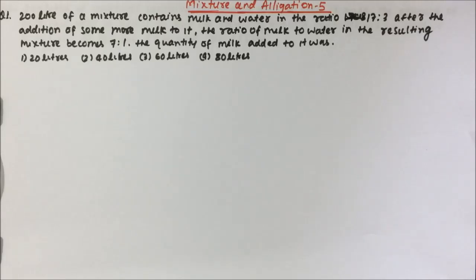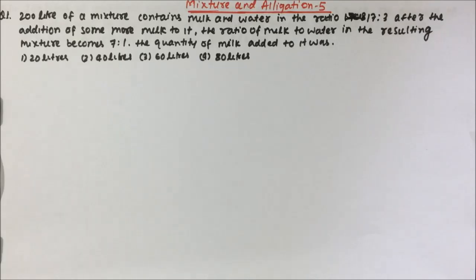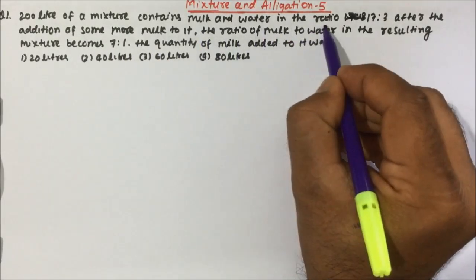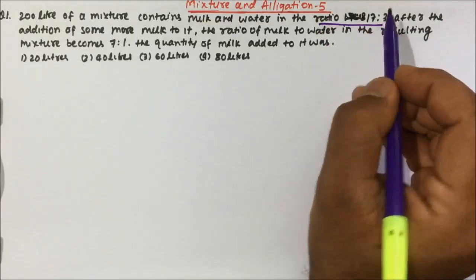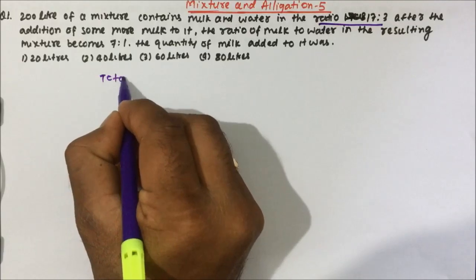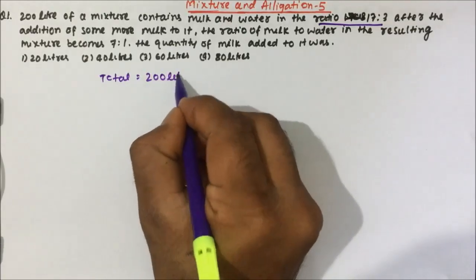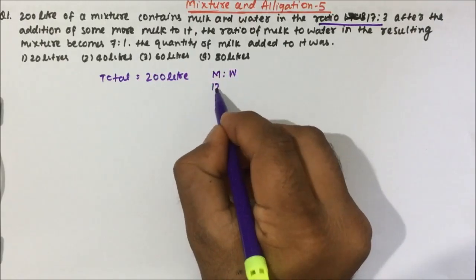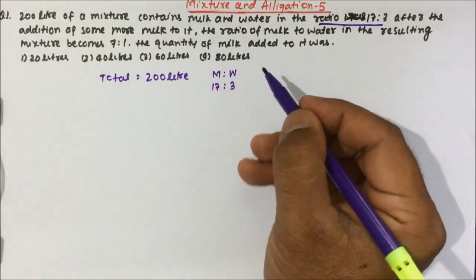So let's understand the question here and try to solve. Our today's question is one of the very important questions and this kind of question will be repeatedly asked in Bank Clerk, SSC, and LDC exams. So let's understand and try to solve it. The question is: 200 liters of a mixture contains milk and water in the ratio 17 is to 3. The total quantity of mixture is 200 liters.